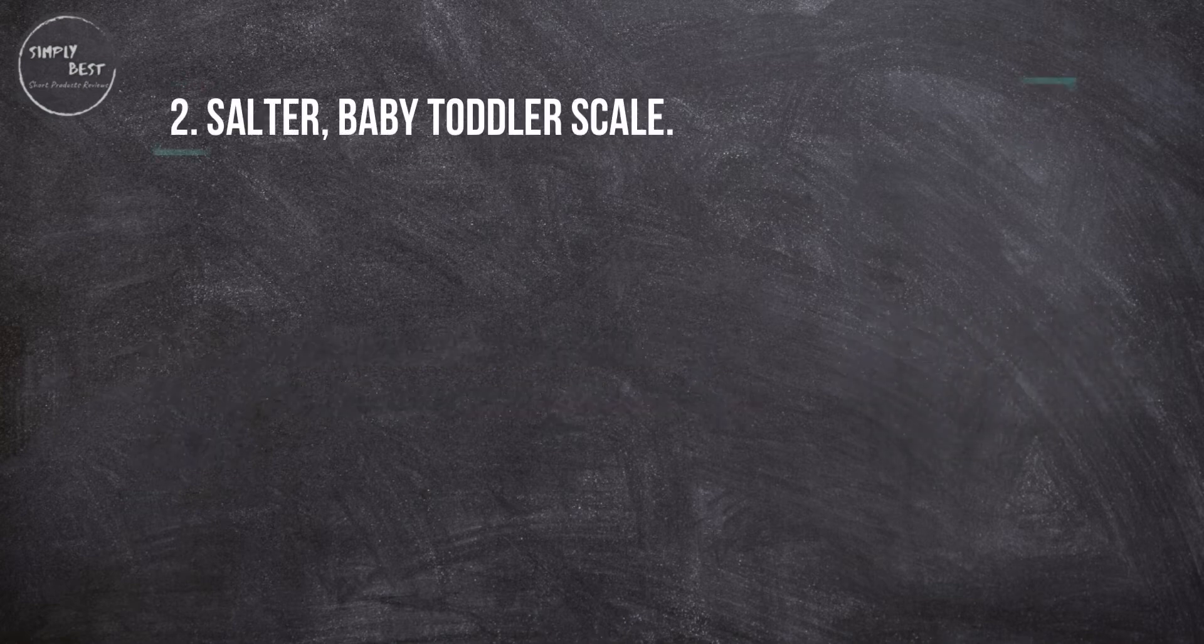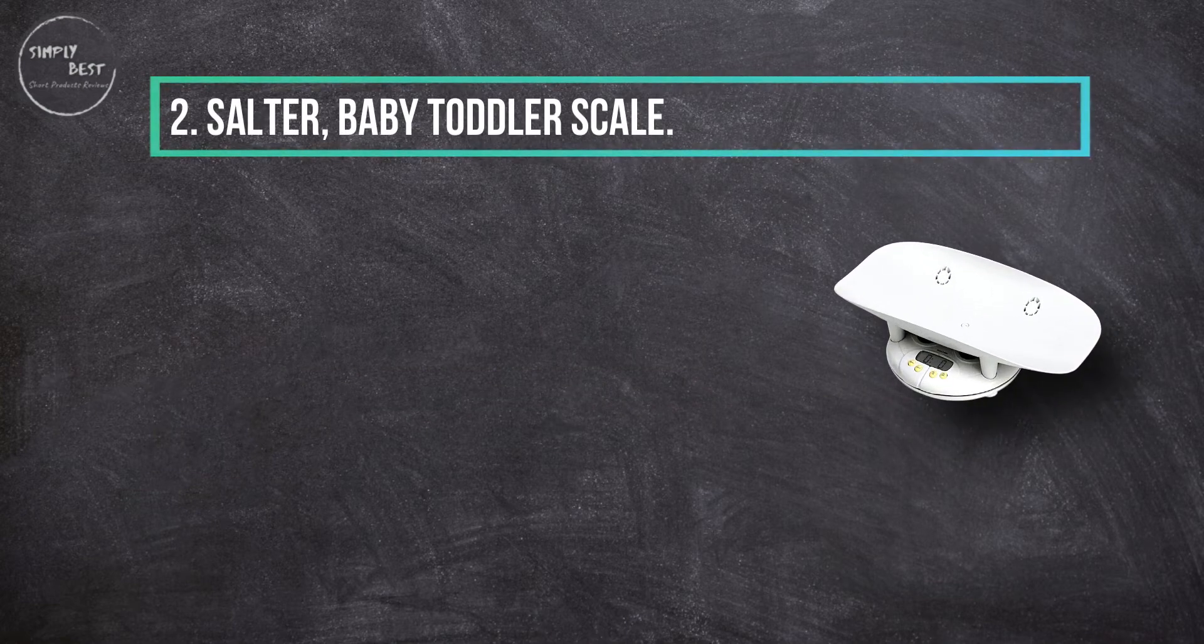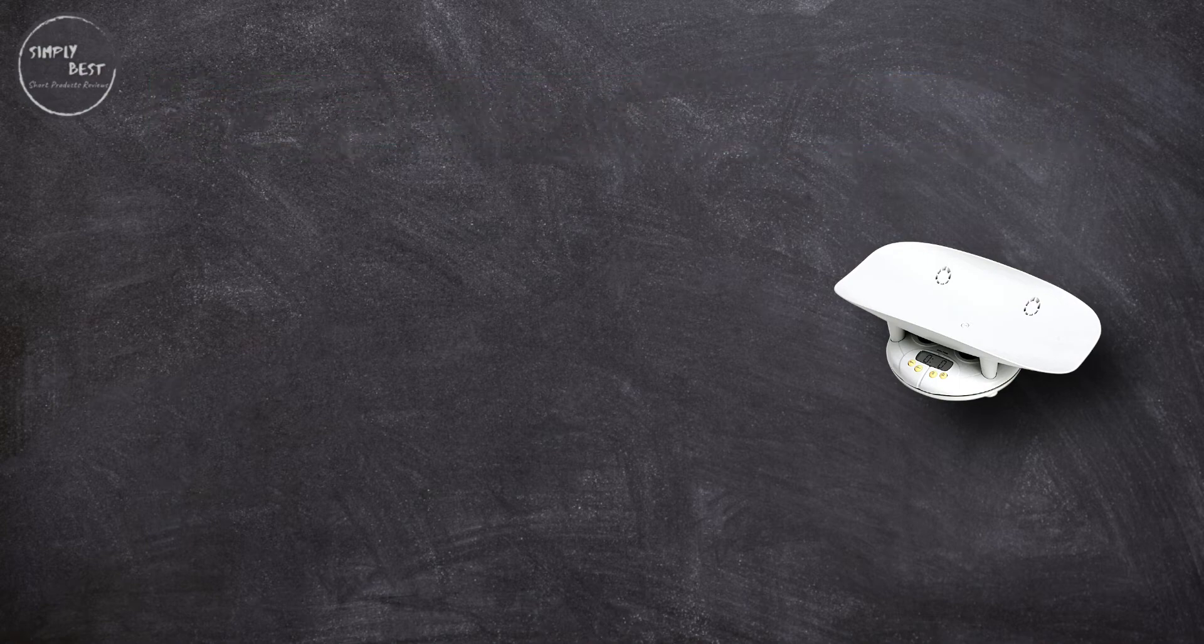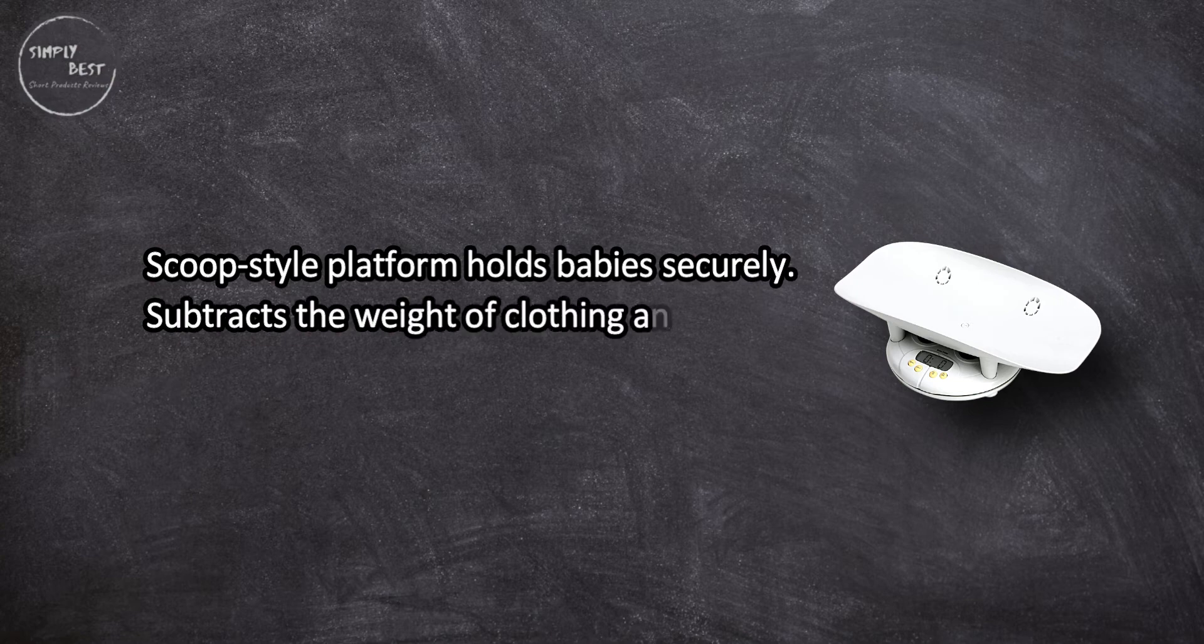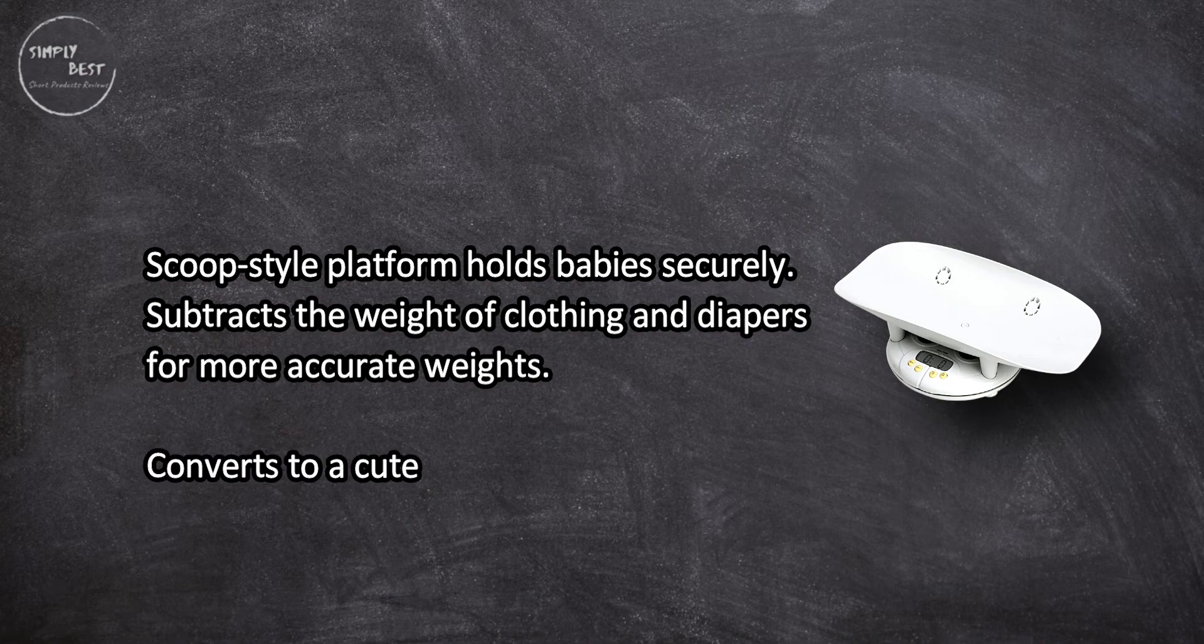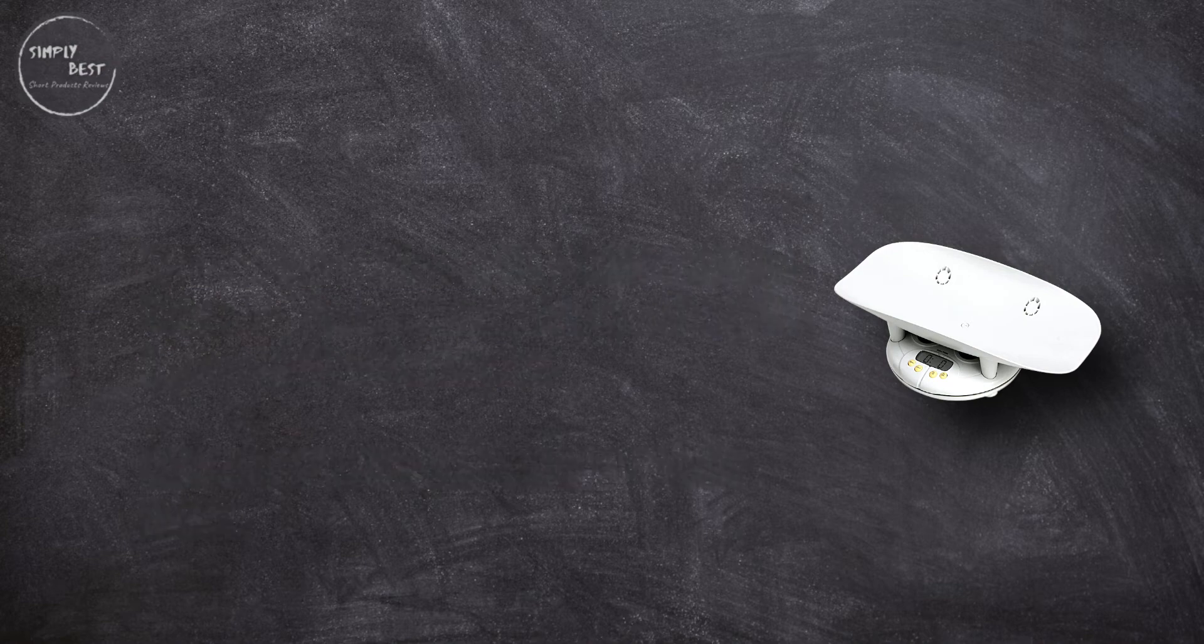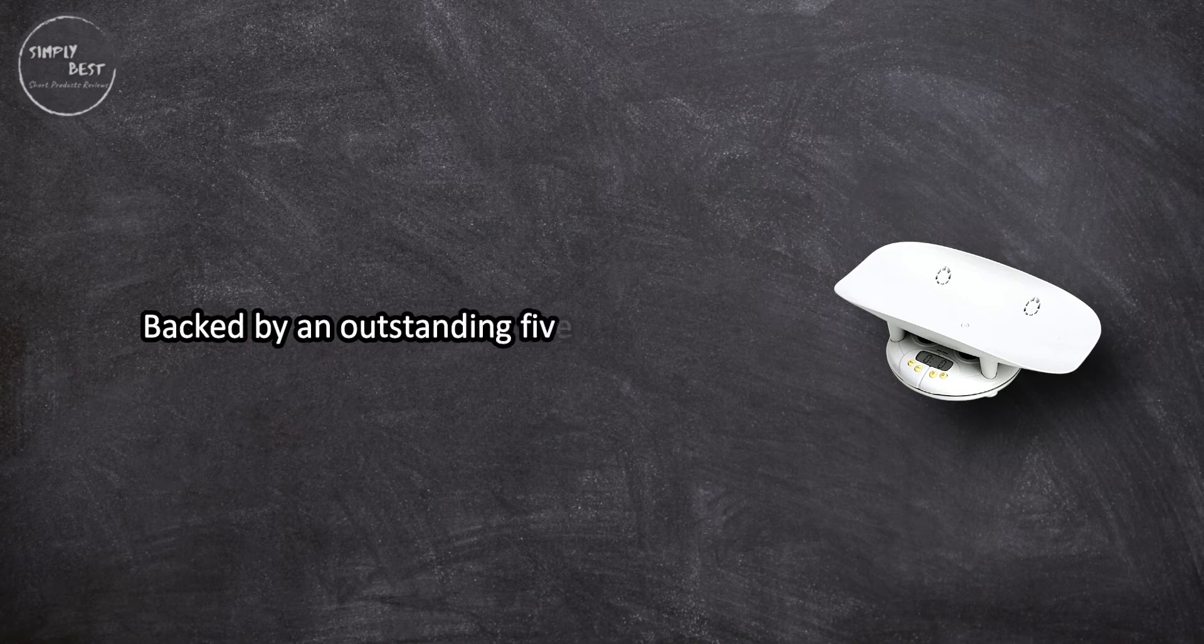At number two, Salter Baby Toddler Scale. Scoop-style platform holds babies securely, subtracts the weight of clothing and diapers for more accurate weights. Converts to a cute toddler scale as baby grows, backed by an outstanding five-year warranty.